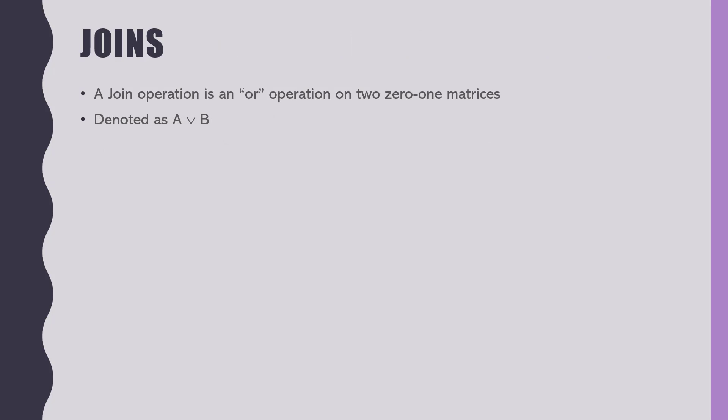Let's start with joins. This is how we denote it — it's A or B, A being the first matrix, B being the second matrix. If I want to OR these with each other, or in other words join these together, all we're going to do is basically do matrix addition.